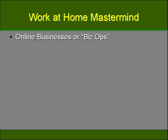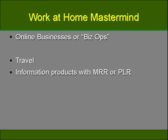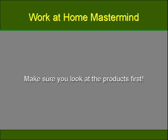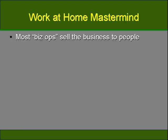Biz ops usually fall into three main areas: travel, information products with master resale or private label rights, and education and training. While the pitch is about how easy it is to make a lot of money, the overall idea is to sell the business opportunity itself. When you first go into this kind of business, look at the products first. You should be able to use the products the business provides as well as sell them, because that's where you'll make your money on a constant basis. Be careful, because most biz ops are focused on selling the business to people, not the actual products and services.